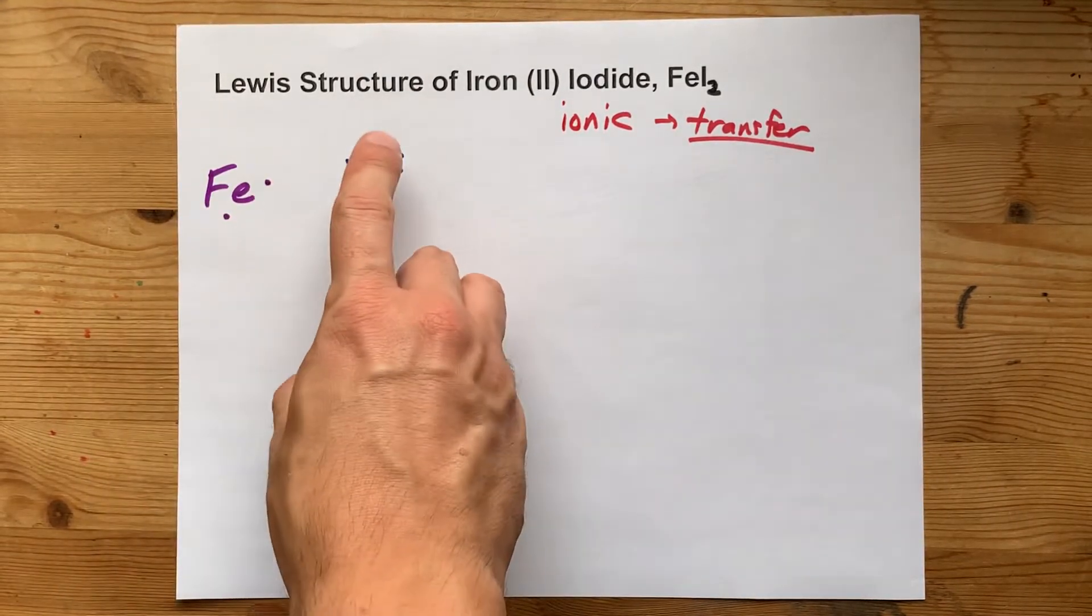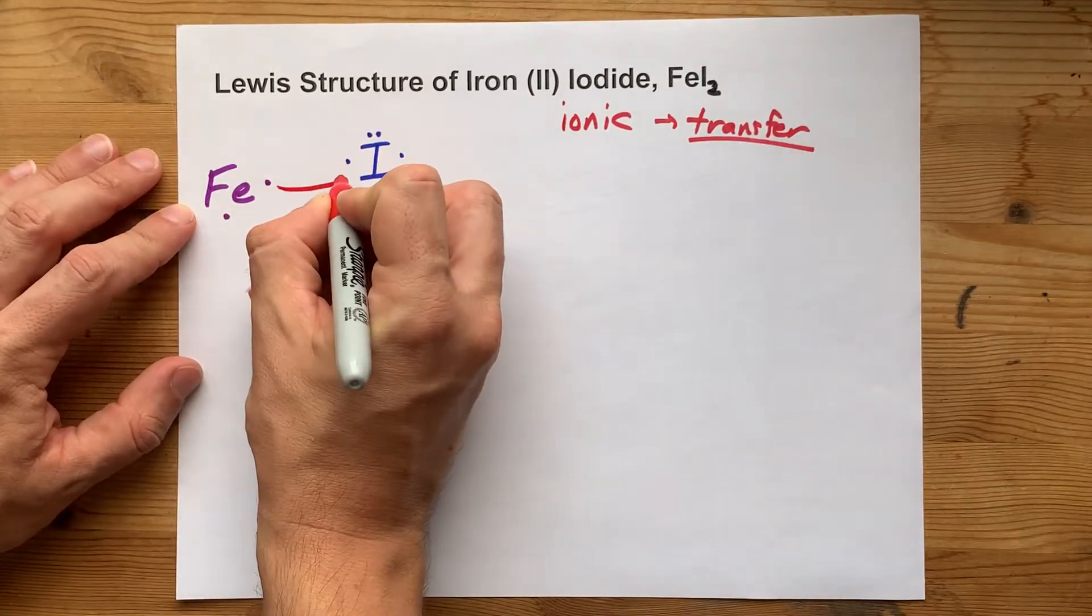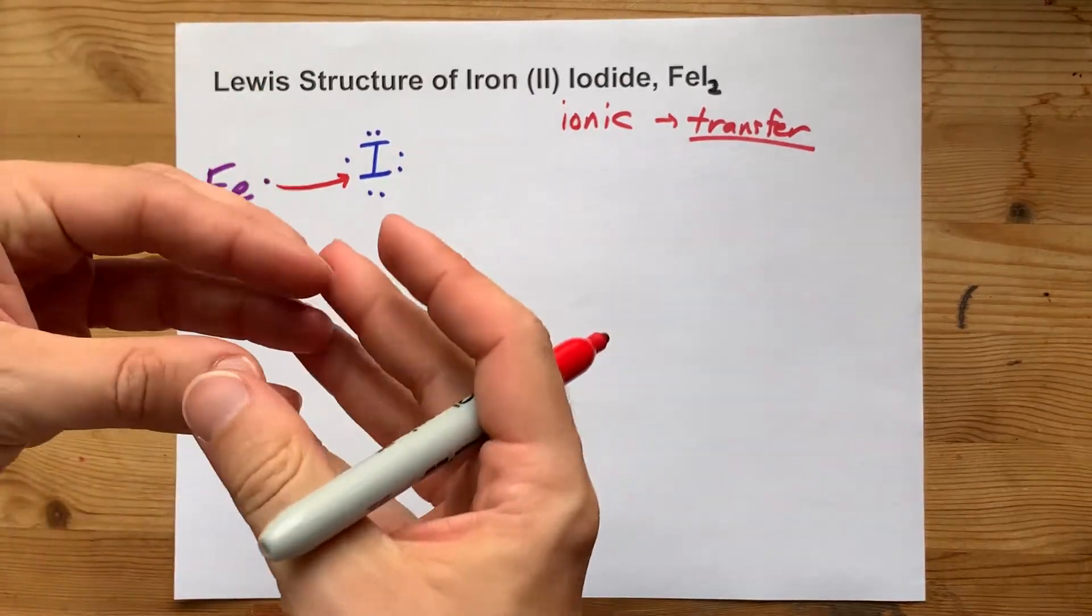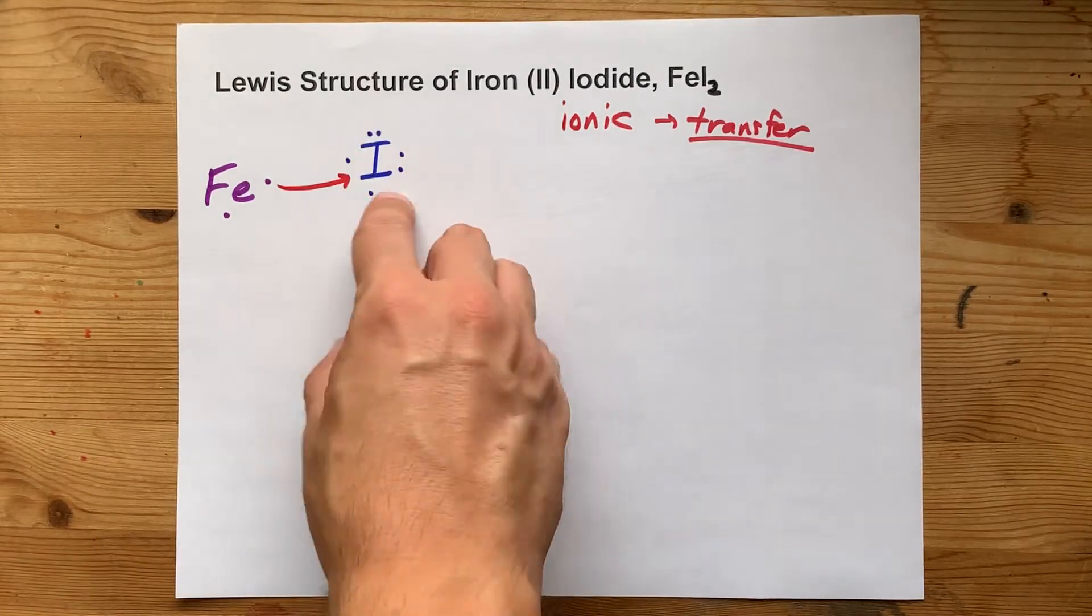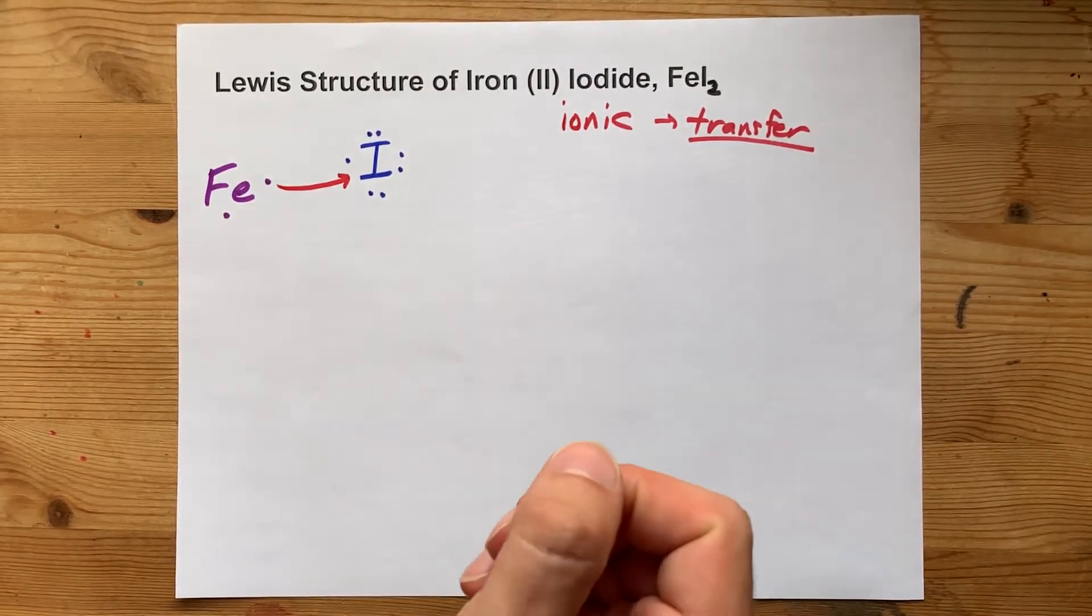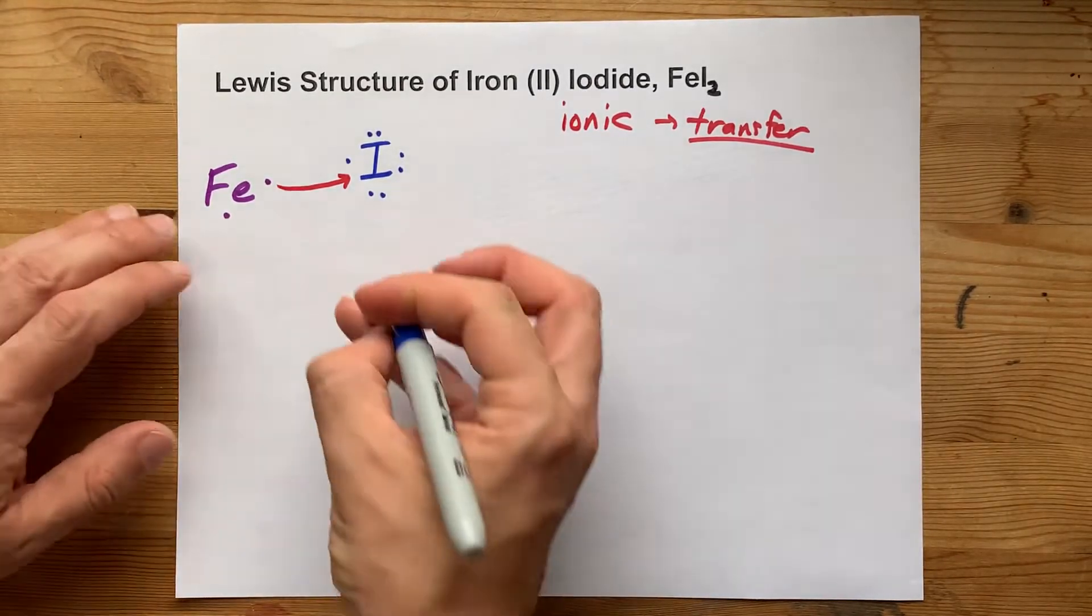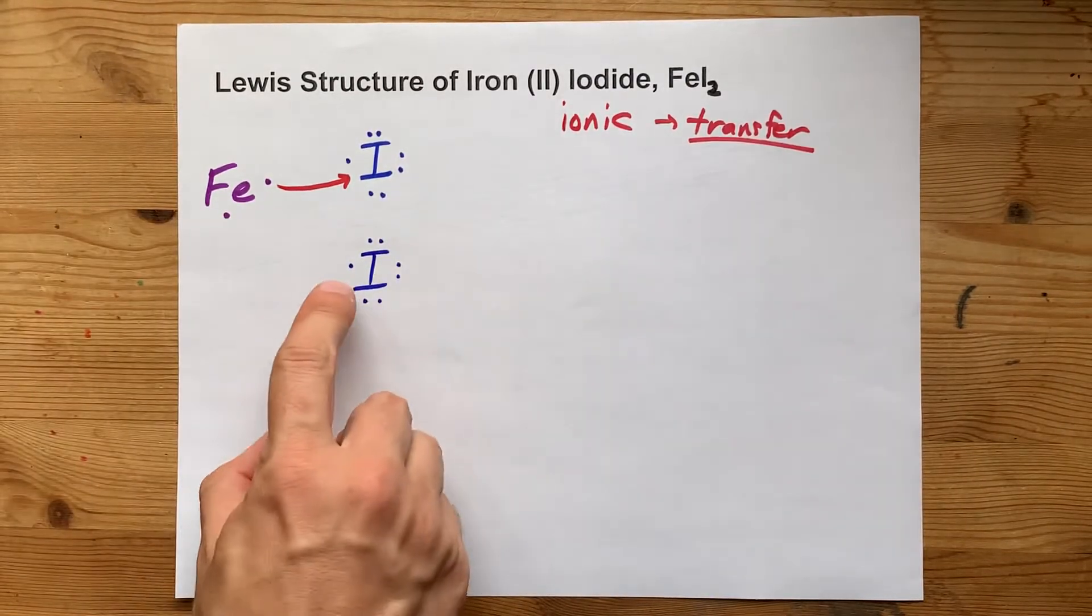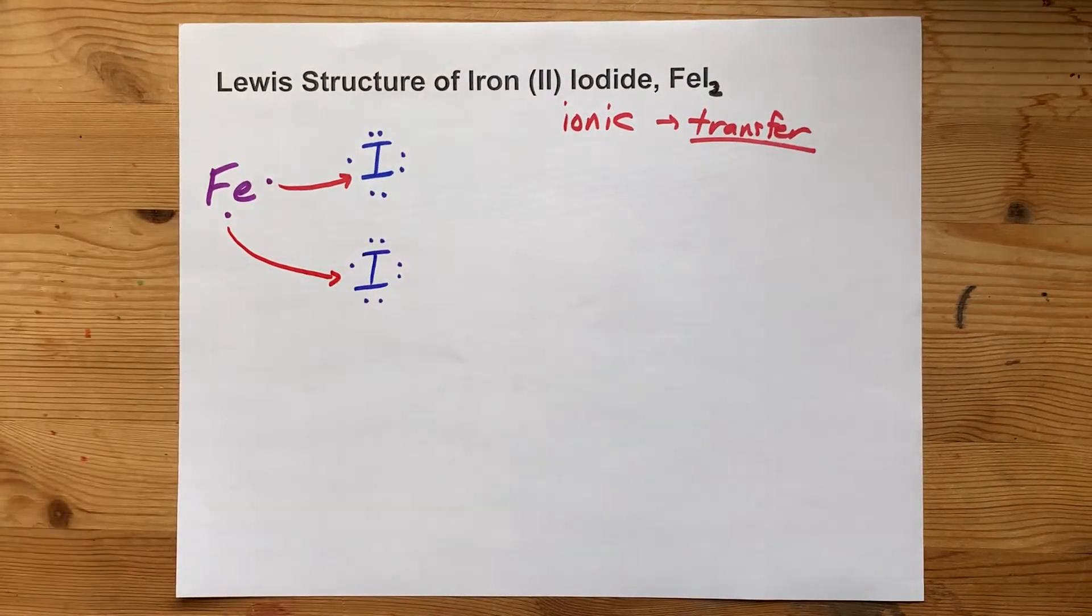Metals give their electrons away to non-metals. So this electron from iron is going to go here, complete the octet, or set of 8 electrons that iodine wants, and that iodine has now become iodide and is happy. It has a complete octet. So where's iron's second electron going to go? Well, actually, you need a second iodine atom with its 7 valence electrons to absorb one more electron.